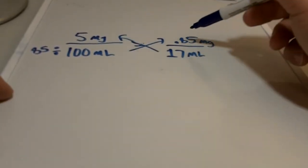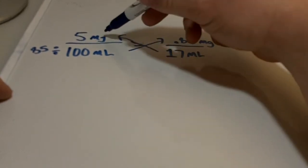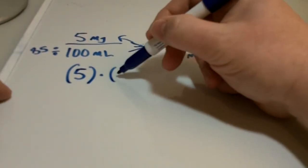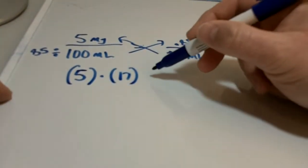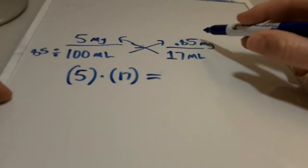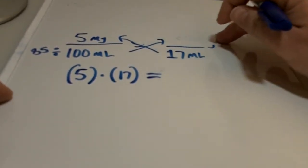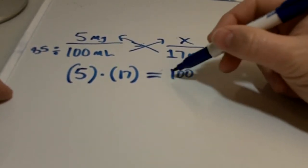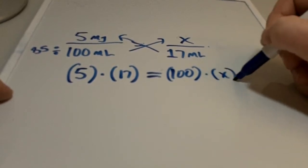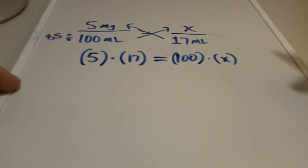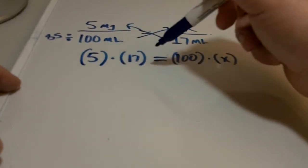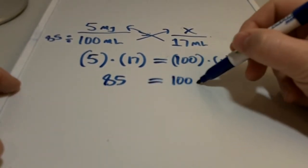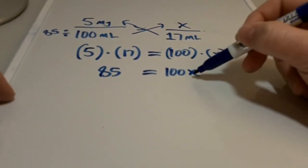But if you were to cross-multiply these two, what you would get is you cross-multiply this way, which would be 5 times 17 equals, and then cross-multiply this way. And as you remember, this before was unknown, so it would have been x, 100 times x. So when you do your multiplication here, you get 85 equals 100x. And to isolate this x, you would divide each side by 100.